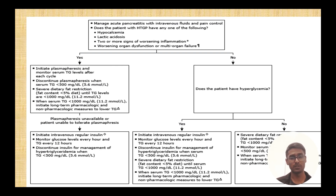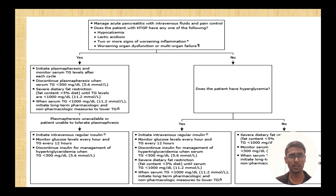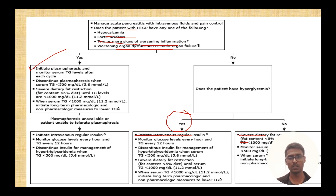For hypertriglyceridemia-induced pancreatitis: if a patient presents with pain and triglycerides more than 1000, first check for hypoglycemia and lactic acidosis as signs of worsening. If either is present, directly proceed to plasmapheresis. If not, check glucose — if the patient has hyperglycemia, start insulin. Otherwise, give fluids and medications to decrease triglycerides. If plasmapheresis was initiated, discontinue it when triglycerides fall below 500.